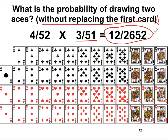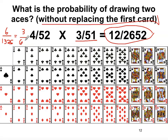Therefore, your chance is 12 over 2,652 — that is the probability of getting two aces consecutively in a deck of cards. Out of 2,652 tries, you will only get 12 chances. Remember that you can actually reduce this fraction further, but let's settle there because we still have a lot of things to discuss.